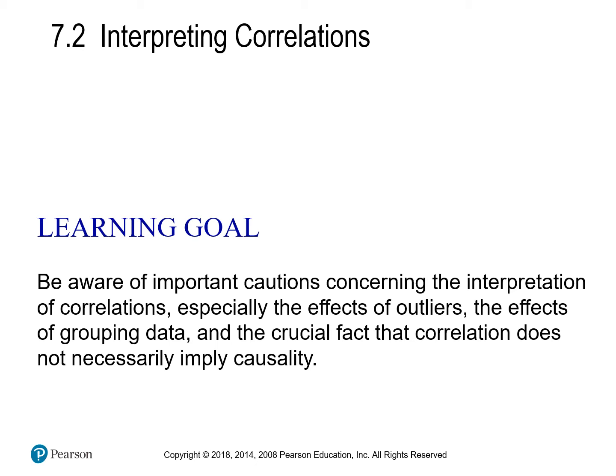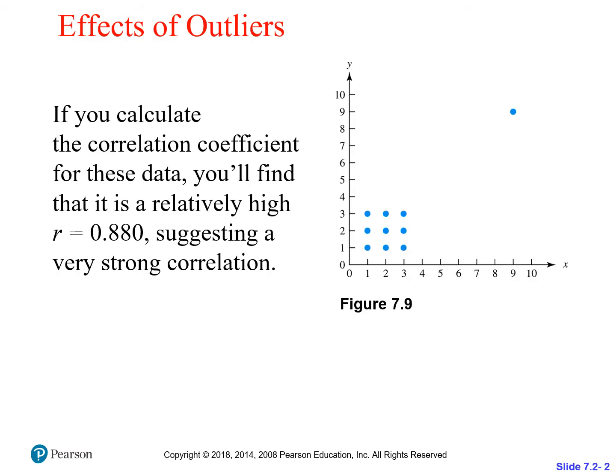We're going to be aware of some cautions when we look at correlations, especially how outliers can really play havoc on some things. Most importantly, we're going to learn that correlation and causation are separate concepts. If you calculate the correlation coefficient for the data in this figure, we're going to get an R value of 0.88, which normally we know is a very strong positive correlation. But when you look at the actual data, you see we've got an outlier. And if we were to take that outlier away, our R value would be 0.